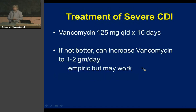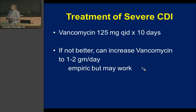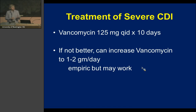For severe C. diff, start with vancomycin 125 milligrams four times a day. If your patient doesn't improve, you can increase the vancomycin to 250 or 500 milligrams four times a day. There is no formal data to support this, but clinicians who treat C. diff have found that a dose increase helps patients who are not improving.